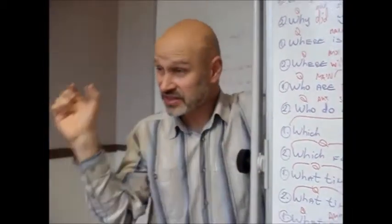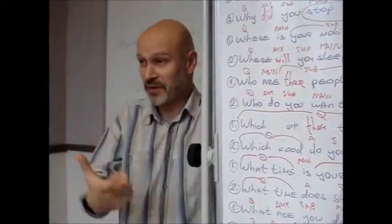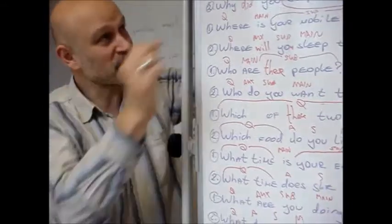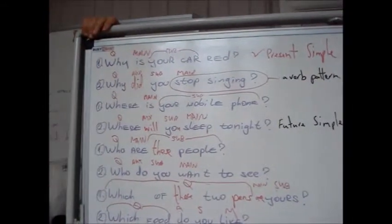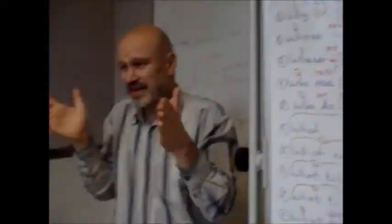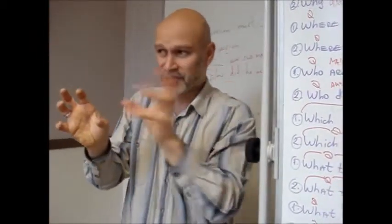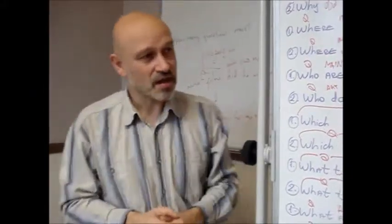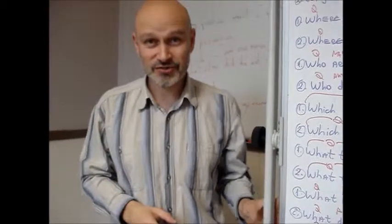But for all of these tenses, we still stick to the same structure: question word, auxiliary verb, subject, main verb. It's just the present simple, where you use the auxiliary verb to be, that the sentence is even simpler—just with a question word and main verb, then the subject and the rest of the sentence. I hope that makes sense to you guys. I'll see you tomorrow.